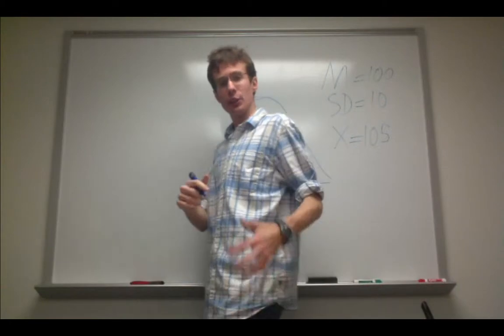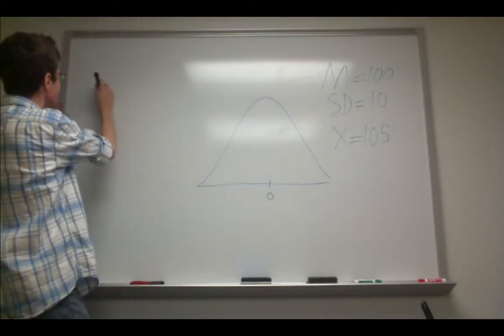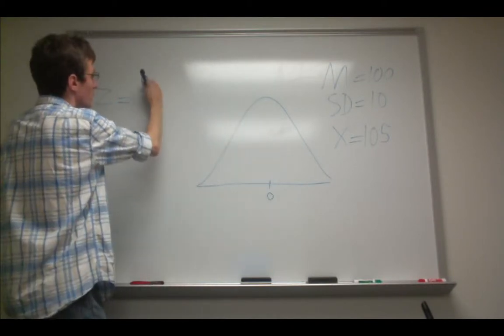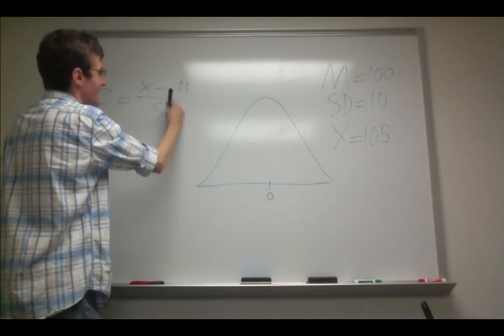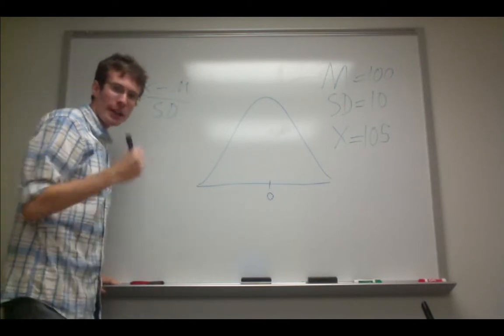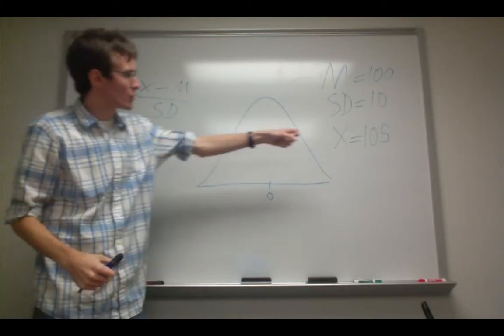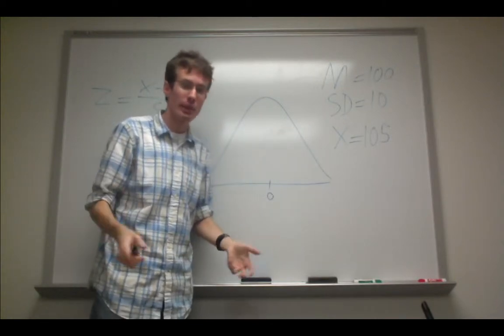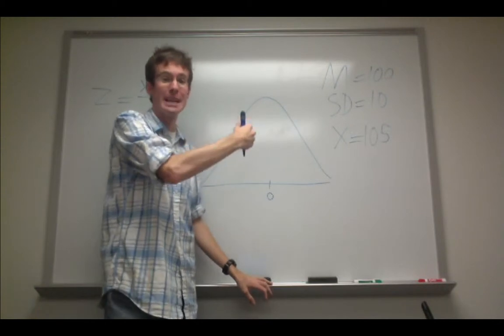The formula to calculate a z-score from this information is z equals the raw score or x minus the mean divided by the standard deviation. Now conceptually, what this formula means is how far is this raw score away from the mean in standard deviations? How many standard deviations is it either above or below the mean?